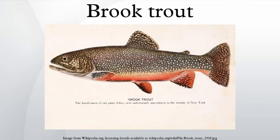A potamodromous population in Lake Superior is known as coaster trout, or simply as coasters. The brook trout is the state fish of nine states: Michigan, New Hampshire, New Jersey, New York, North Carolina, Pennsylvania, Vermont, Virginia, and West Virginia.